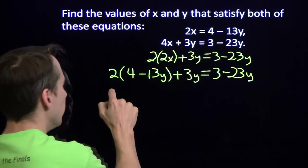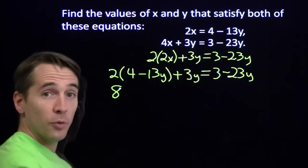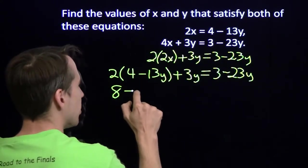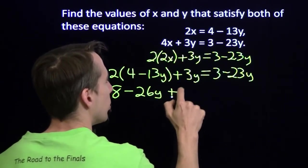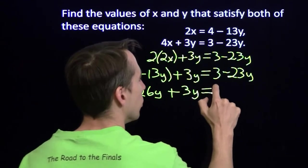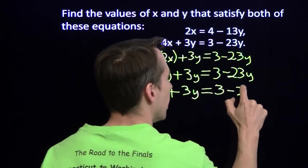Alright, so now let's go ahead and multiply this out. 2 times 4 is 8. 2 times minus 13y is negative 26y, plus 3y equals 3 minus 23y.